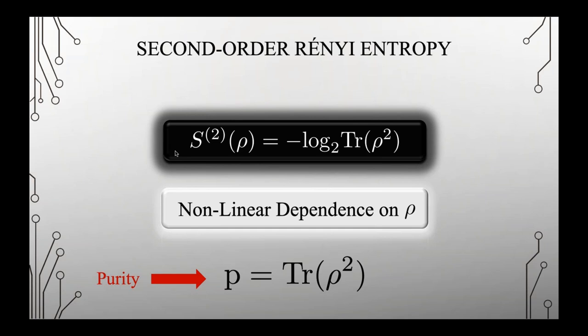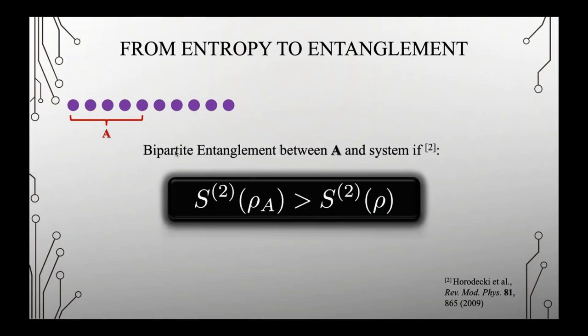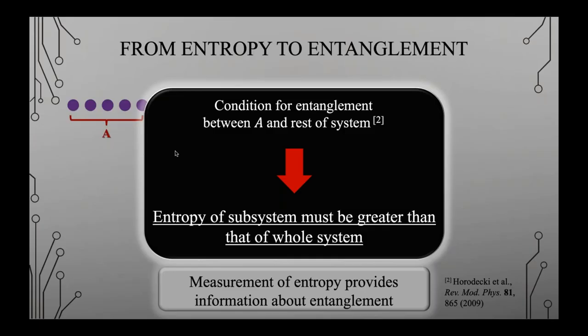Why do we care about measuring this entropy? There's a very nice link between entropy and entanglement. If you consider a chain of ions and look at the first five — call that subsystem A — you can show that bipartite entanglement exists between subsystem A and the rest of the system if the entropy of the subsystem is greater than the entropy of the whole system. That's really quite powerful: if you can measure the entropy, you can get information about the entanglement in the system. So we need to measure that the entropy of the subsystem is greater than that of the whole system.